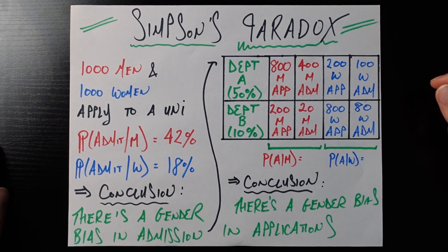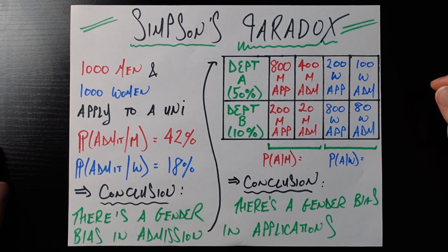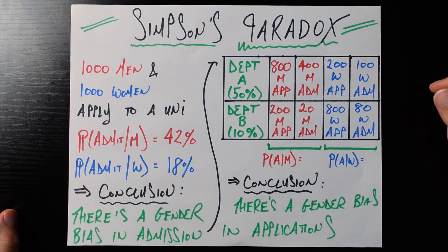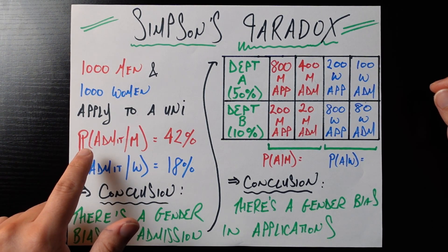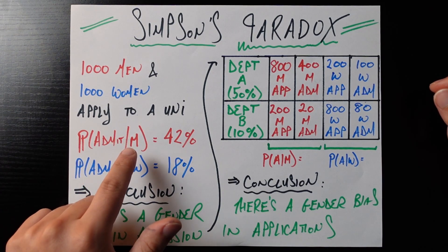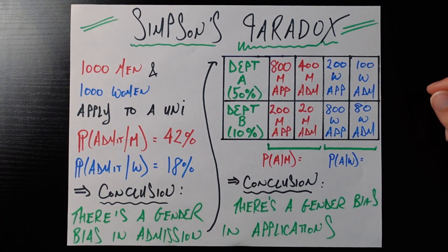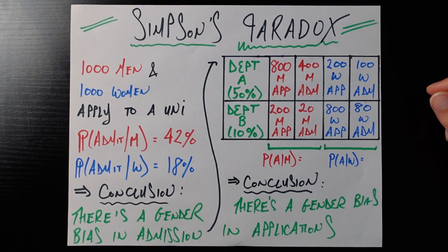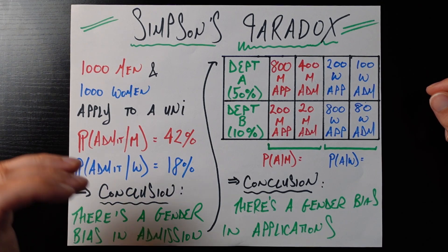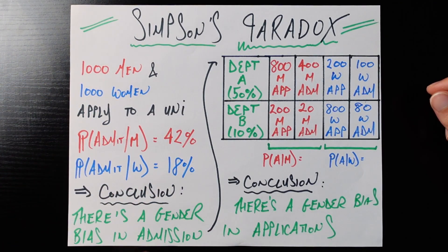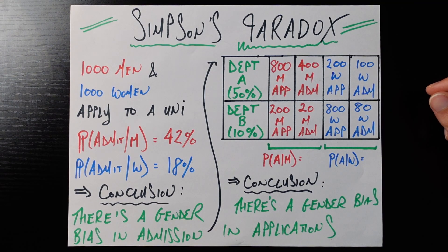So let's say that you are working at a university and you look at your admissions data from last year. You see that 1,000 men and 1,000 women applied to your university. The probability that you admitted someone, given they were a male or the fraction of these 1,000 males that were admitted was 42%. Now you do the same thing for the women. The probability that you would admit a woman, the fraction of these 1,000 women that were accepted was 18%. Whoa, that is a striking difference. 18 is less than half of 42.